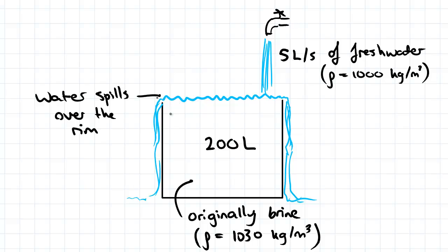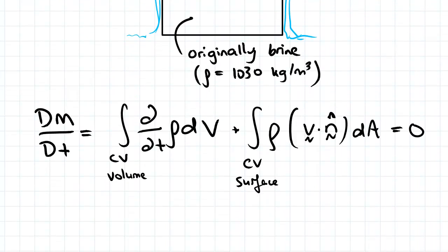Despite dealing with a steady flow here, the fluid inside the drum will have a density that changes with time, so we can't cancel out the first term in our mass conservation equation. We're going to be using that in this calculation.